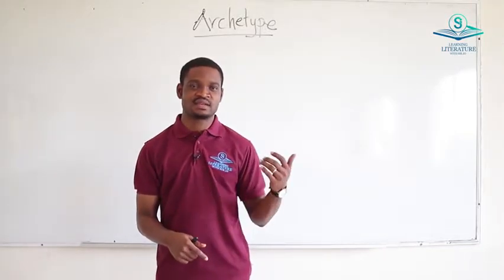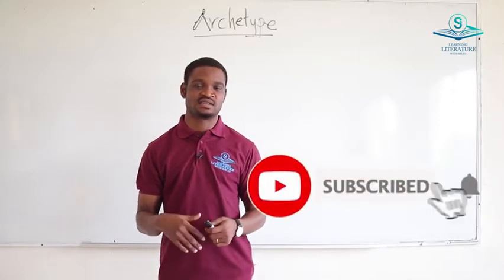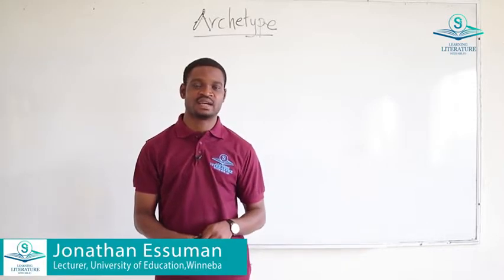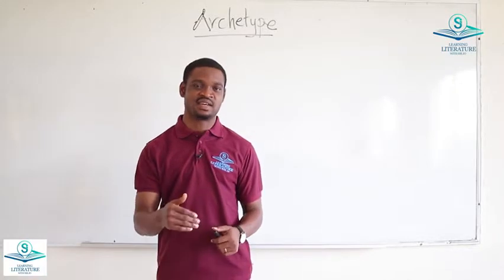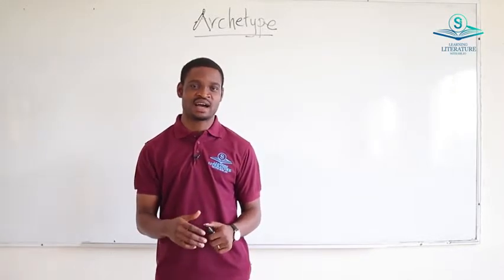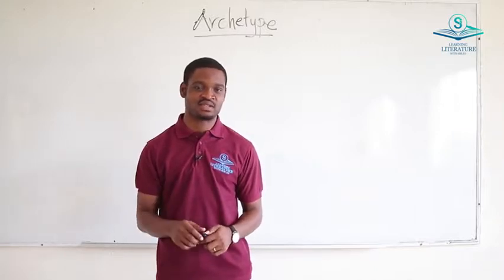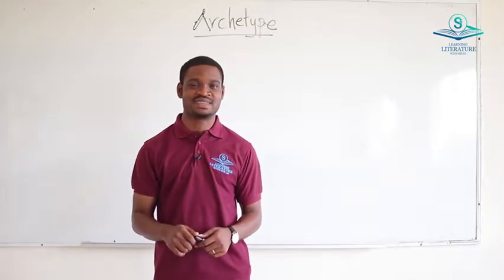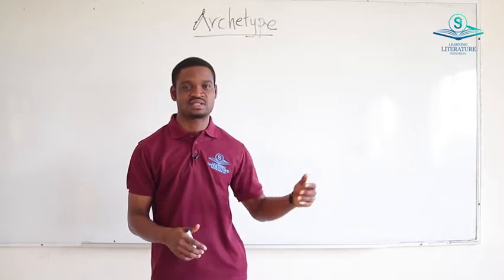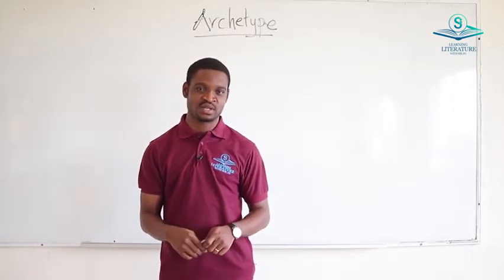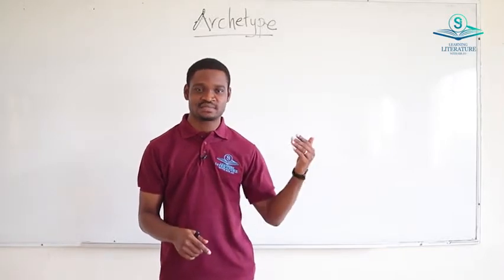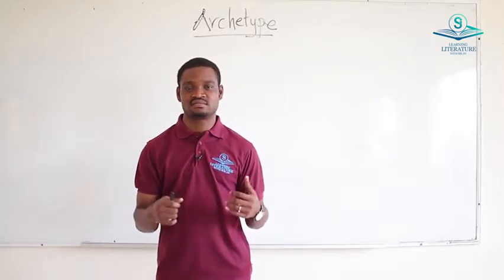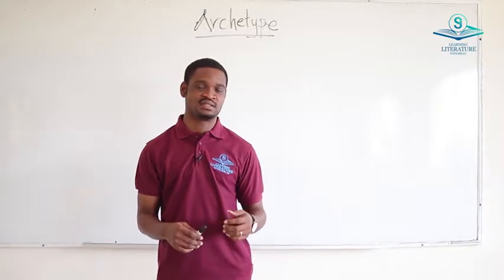Before we start today's lesson, our previous lesson talked about the story structure theory developed by Christopher Booker, which gives us seven different types of plots: the quest, overcoming the monster, rags to riches, voyage and return, tragedy, comedy, and rebirth. We looked at these in detail in our previous lesson, so if you missed it, please check the video uploads and watch the lesson on the types of plots.